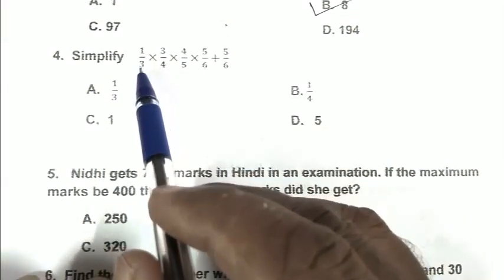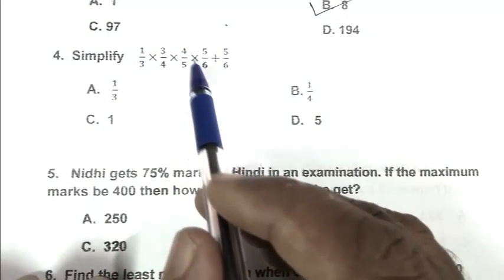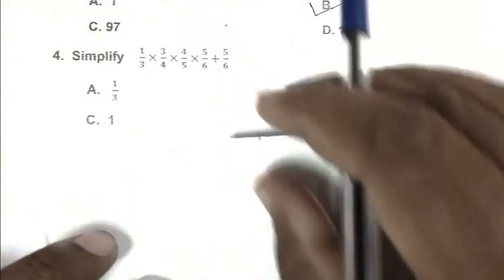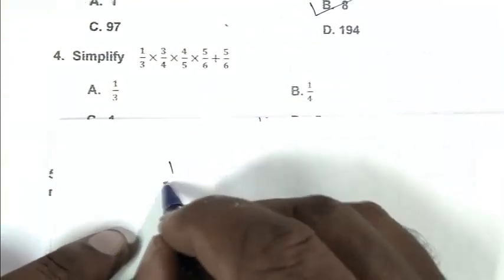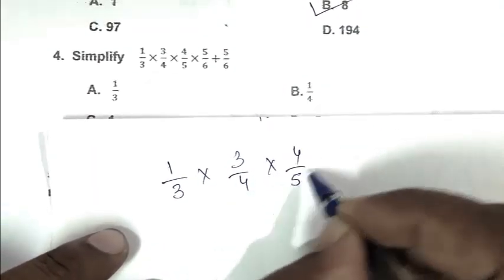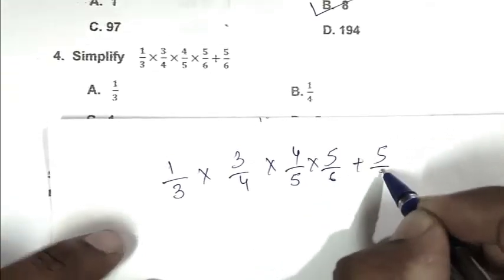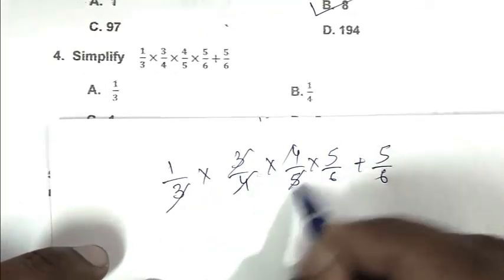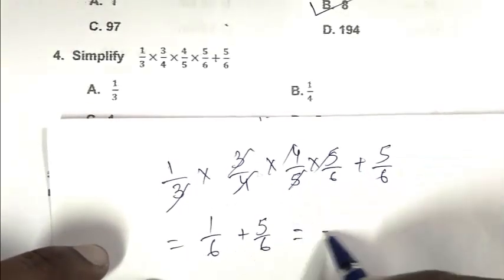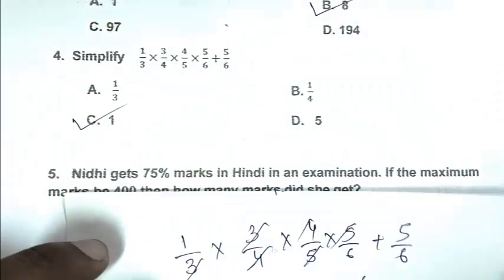Question number 4: Simplify 1/3 multiplied by 3/4, multiplied by 4/5, multiplied by 5/6, plus 5/6. So friend, 3, 4, 4, 5, 5 get cancelled. That is 1/6 plus 5/6, which is 6/6 or 1. So C is the right answer.